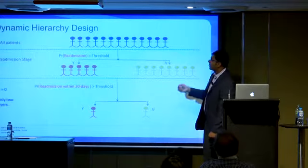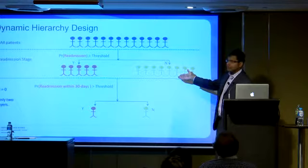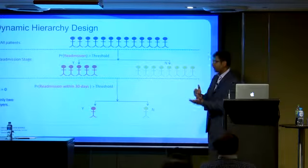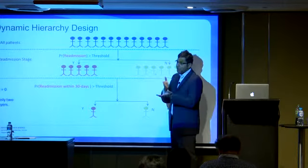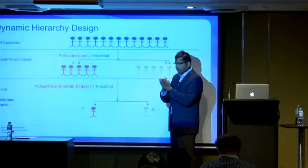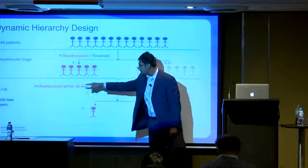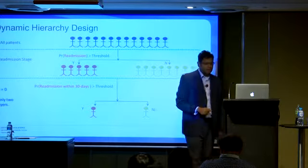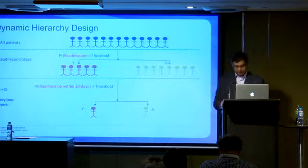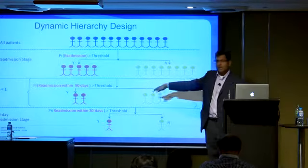For example, if you consider n=0 — no internal layers — deployed only at the point of discharge: you have all your inpatients, you first predict which of them will be readmitted using a probability threshold, then use a specific machine learning model for predicting readmission within 30 days for all patients getting discharged. You can then increase n=1 and predict readmission within 90 days.